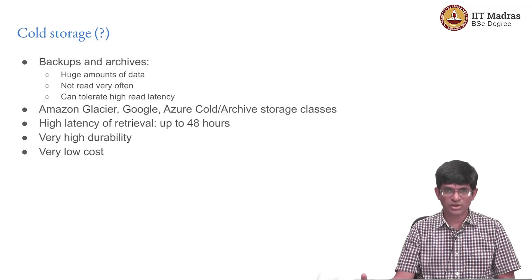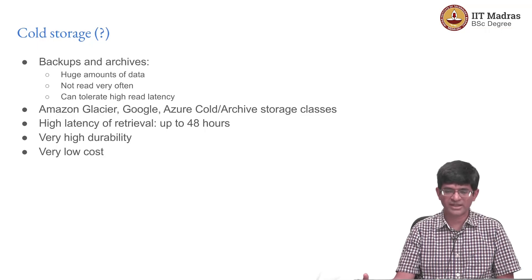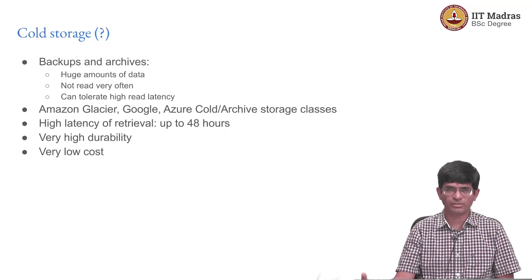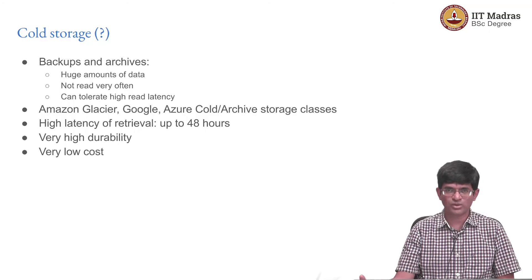There is such a thing as cold storage, and you might have heard of things like Amazon Glacier, or Google and Azure Cloud — all of them have some variants of archive storage classes. The main point is that we are talking about backups of data. Let us say you have all your emails, various files, and photos that you have clicked. You do not want to lose them — what if your phone crashes or your PC crashes? You upload them all onto Google Drive, but how does Google make sure it does not lose the data?